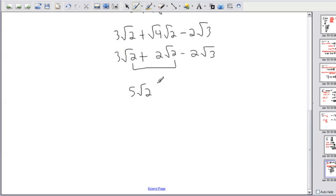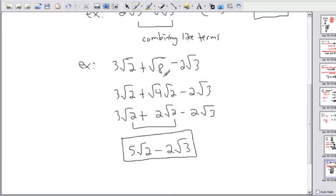So now I can combine the 3 root 2 plus the 2 root 2 and get 5 root 2. And then after that, well this one can't combine with this, so I just rewrite it. Okay, so that could be rewritten. This can be rewritten as this. It's a little bit simpler to look at, I suppose. So that's how we can do those.